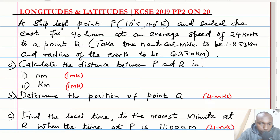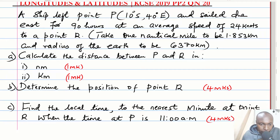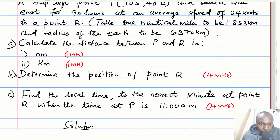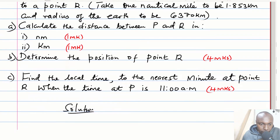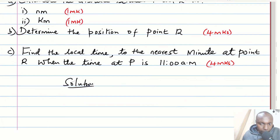Part A of the question: calculate the distance between P and R in nautical miles and in kilometers. Part B: determine the position of point R. Part C: find the local time to the nearest minute at point R when the time at P is 11 AM.